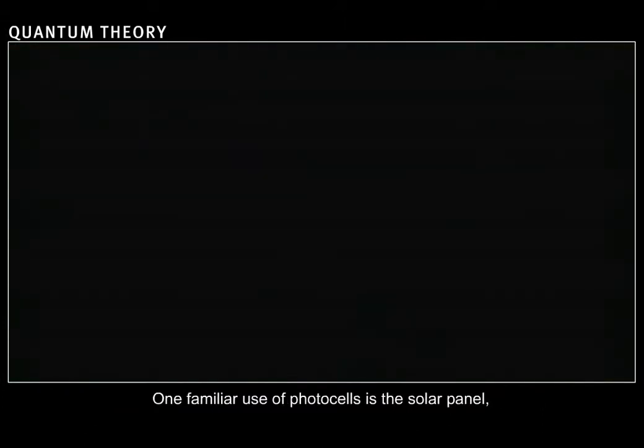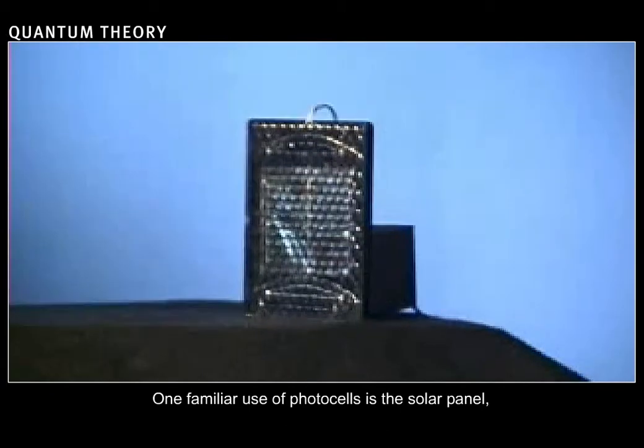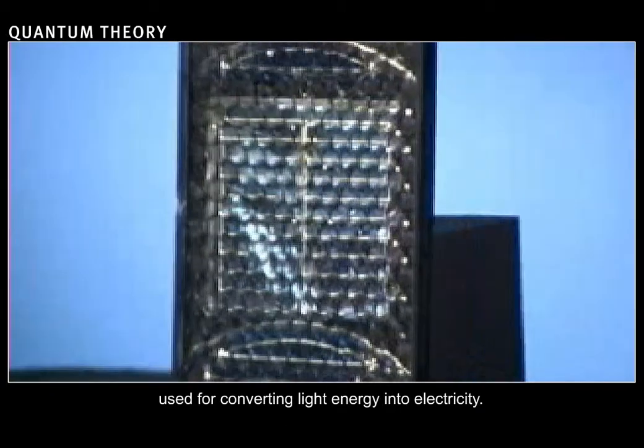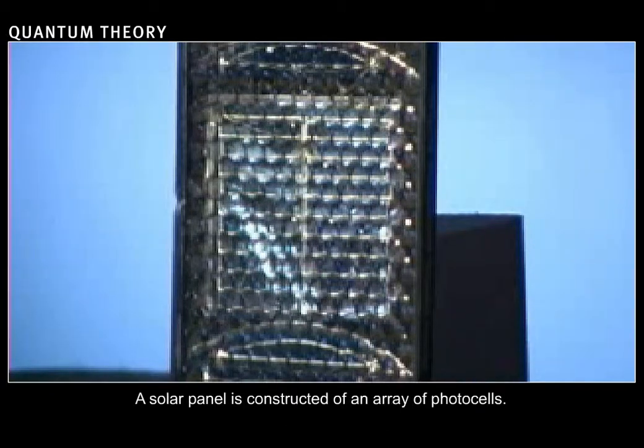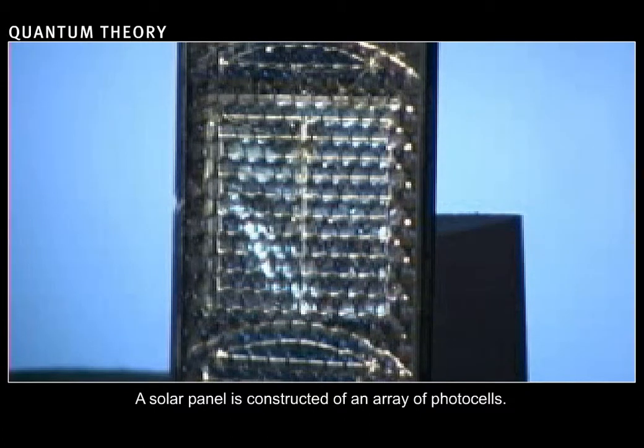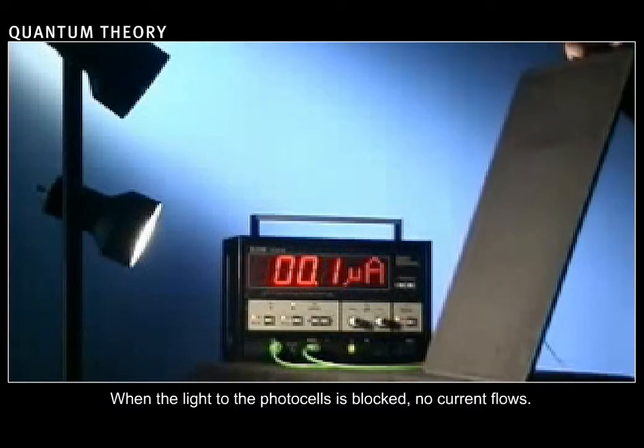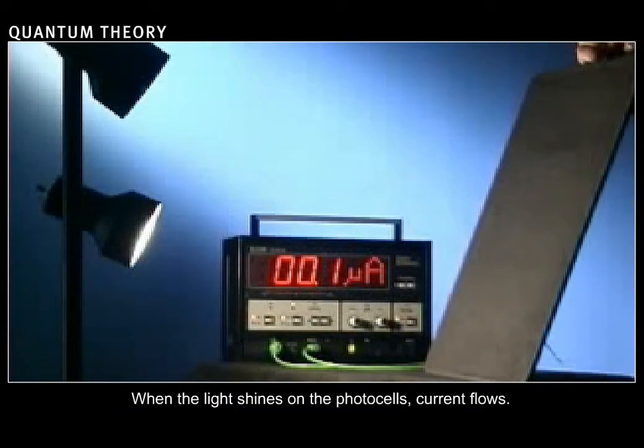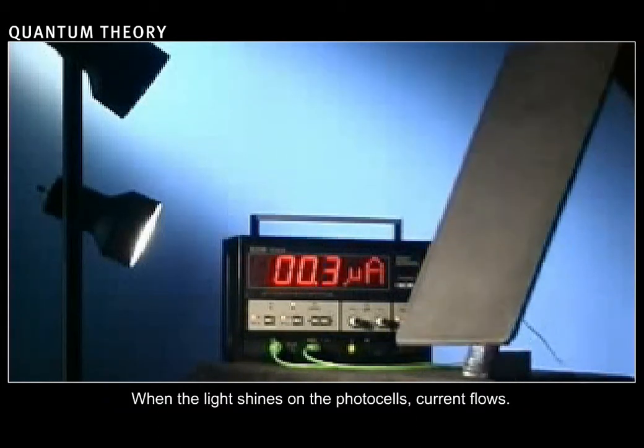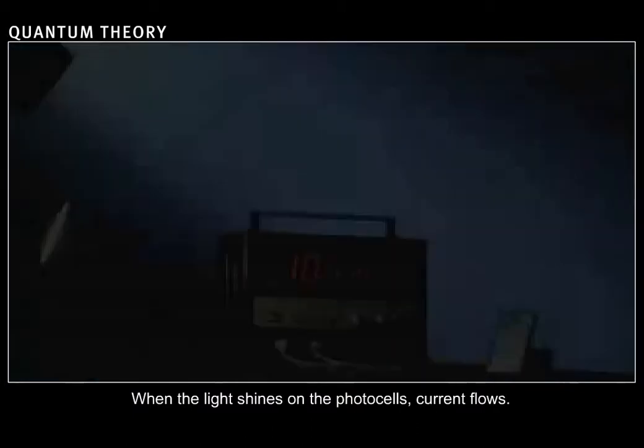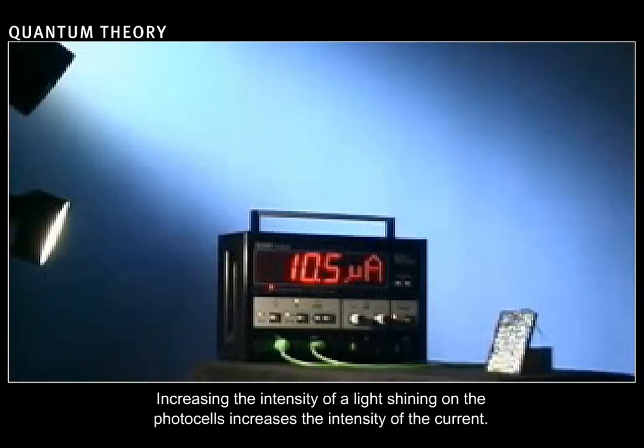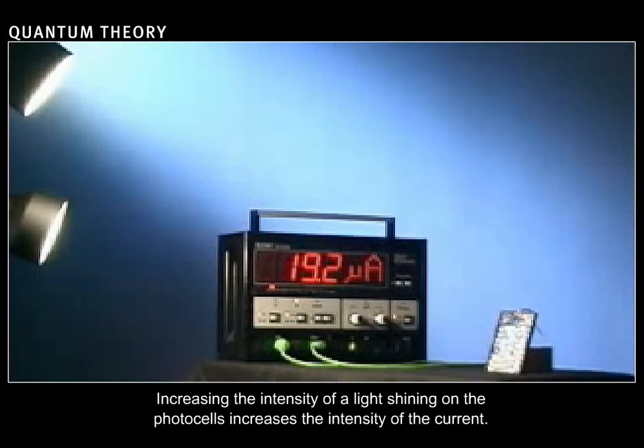One familiar use of photocells is the solar panel, used for converting light energy into electricity. A solar panel is constructed of an array of photocells. When the light to the photocells is blocked, no current flows. When the light shines on the photocells, current flows. Increasing the intensity of the light shining on the photocells increases the intensity of the current.